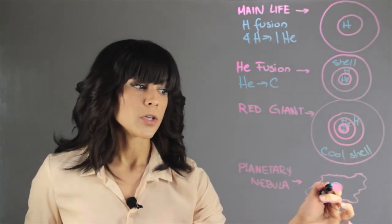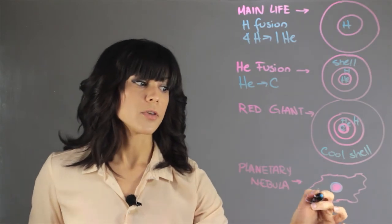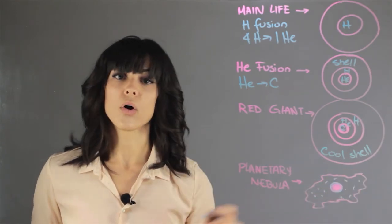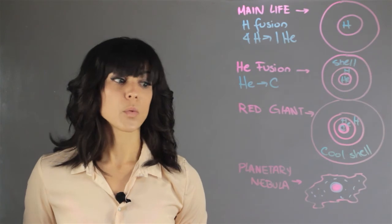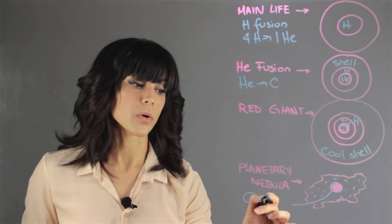So you end up with only a carbon core in the center and a diffuse shell cloud all around it. So what is at the center of a planetary nebula is actually a carbon core.